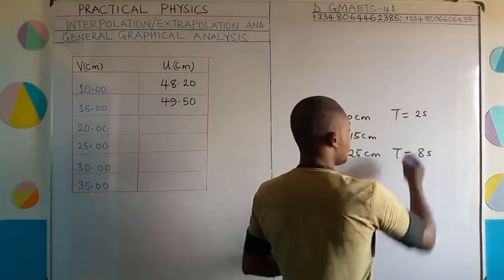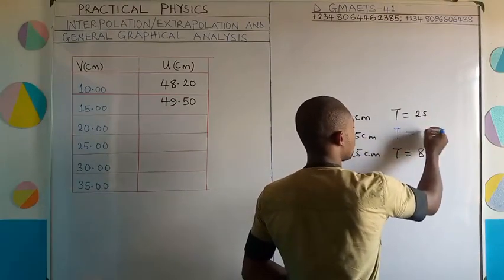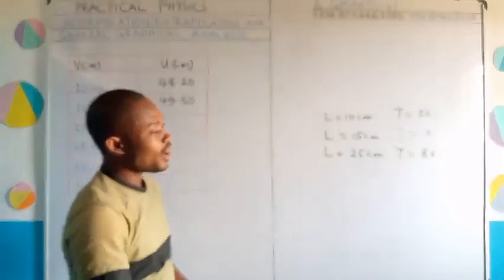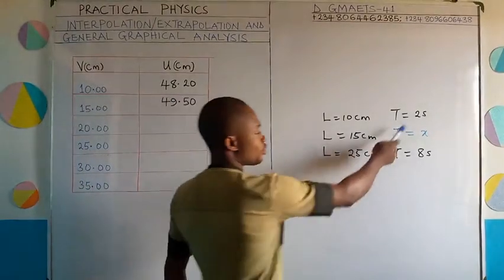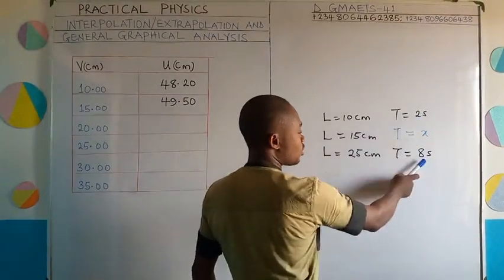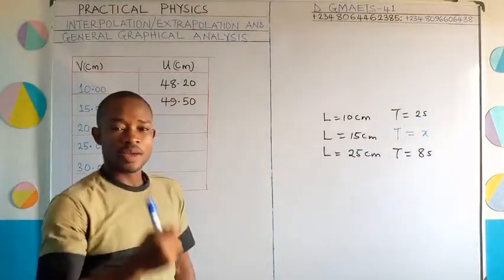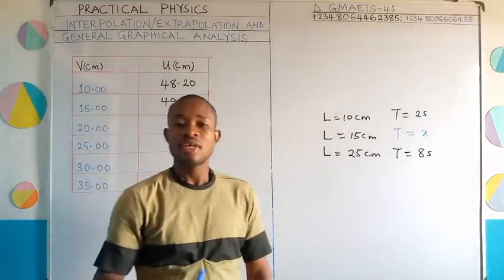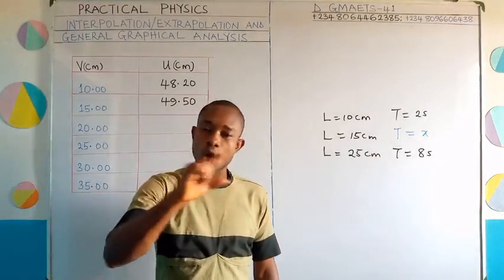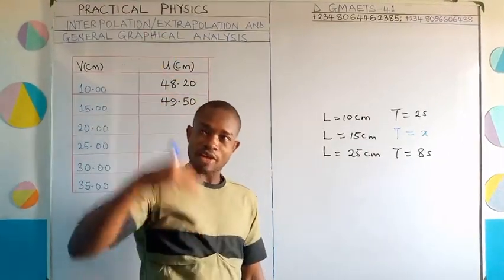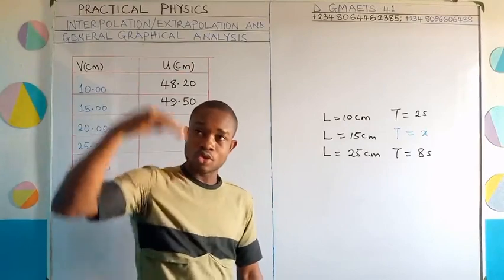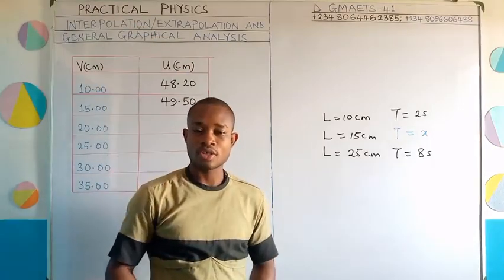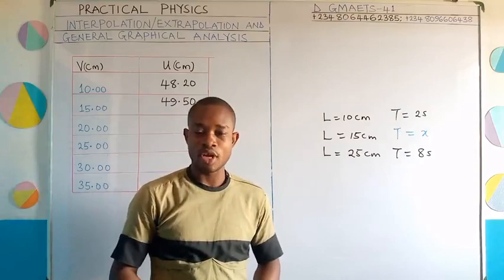Interpolation would help you out. In this case, t is equal to some unknown x. Observe that x is between two values — 2 seconds and 8 seconds. The process that leads to getting that value of x, since that unknown we are looking for is between two values, using those two values to get x which is between them — that process is called interpolation.